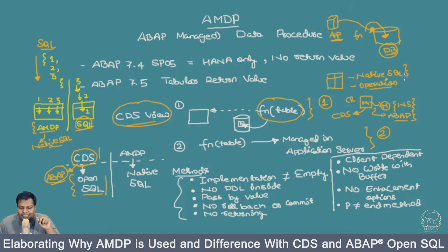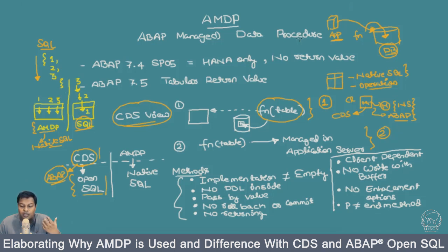That is the basic overview. In the next section, we'll understand from which version AMDP became available and also what exceptions exist — things you cannot do with AMDP. These basics are important to understand before implementing. It's always better to have a basic level of understanding before going into the practicals, so you're thinking not just in terms of code but also why we do certain things in a certain fashion.